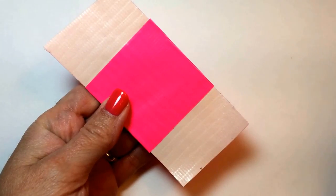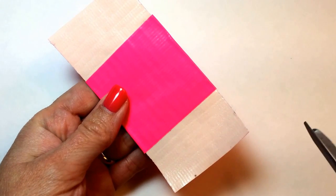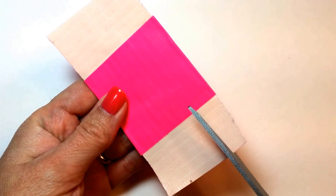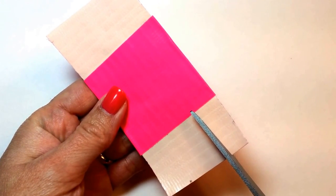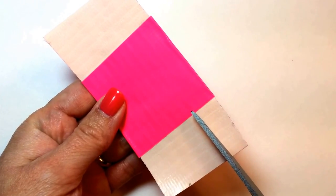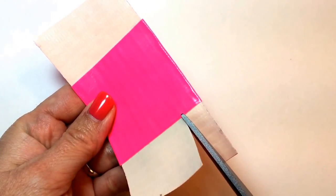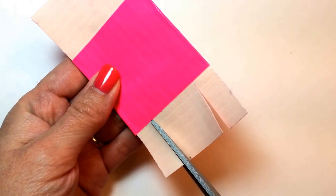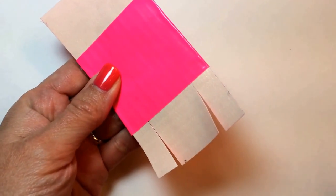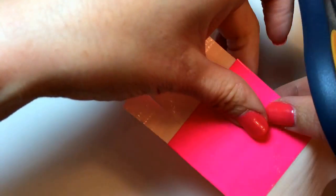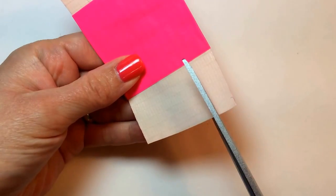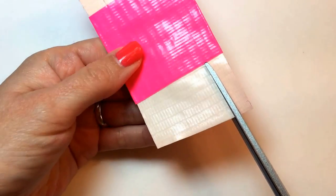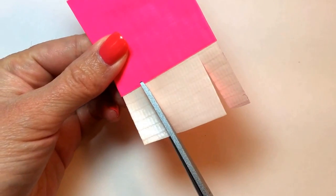Once you do that, you're going to take your scissors again, and we're going to cut about one centimeter in from the sides on both sides. Just like that.